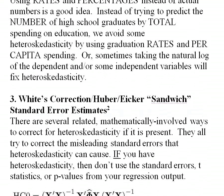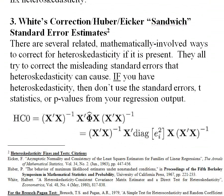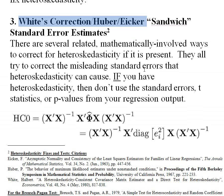Now the most common way to fix heteroscedasticity among economists today, if you don't really know exactly where the heteroscedasticity is coming from, is what we call White's correction. Although, to be accurate, you should call it the White-Huber-Eicker correction, because these three people — White, an economist, Huber, a mathematician, and Eicker, also a mathematician — more or less independently came up with basically the same way to fix heteroscedasticity. In economics we usually just call it White's correction.